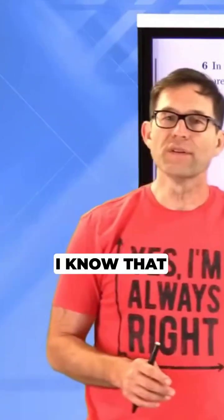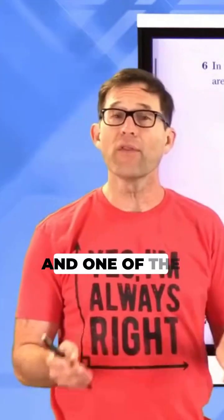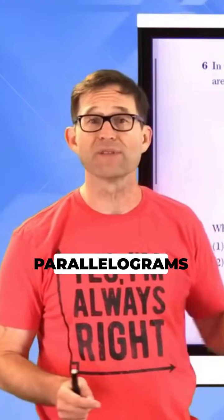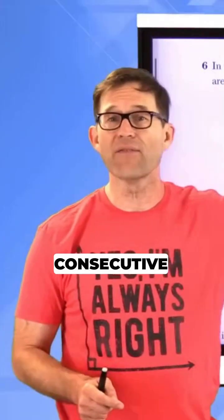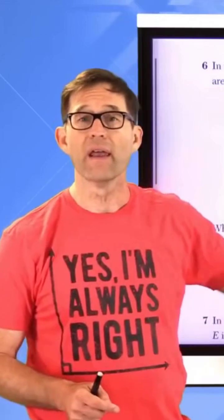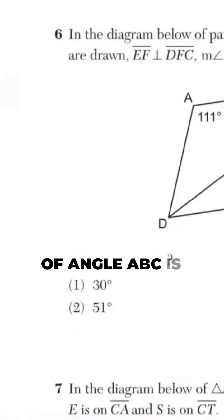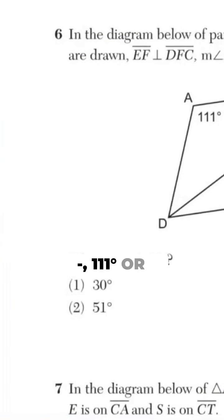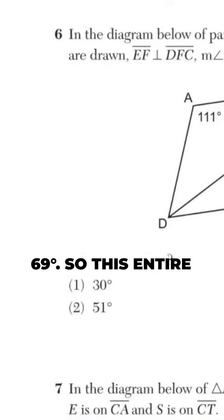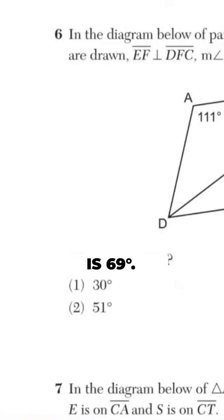What else do I know? I know that this figure is a parallelogram, and one of the things I should have learned about parallelograms is that two consecutive angles are supplementary. In other words, the measure of angle ABC is 180 degrees minus 111 degrees, or 69 degrees. So this entire angle from here to here is 69 degrees.